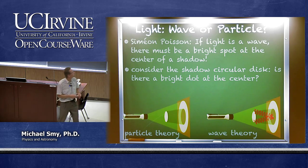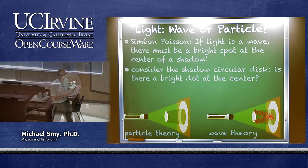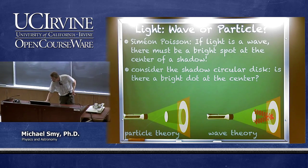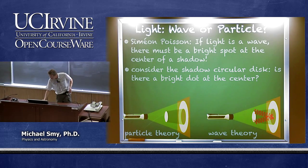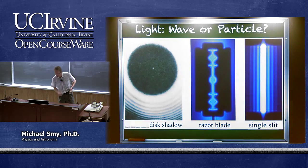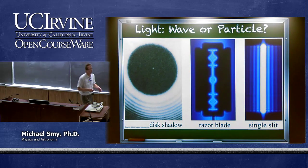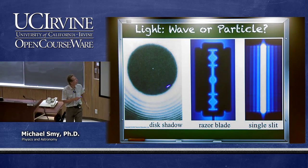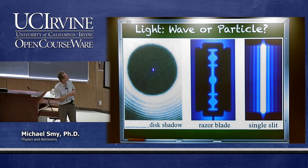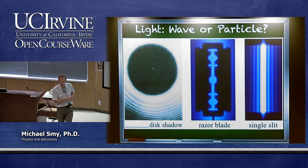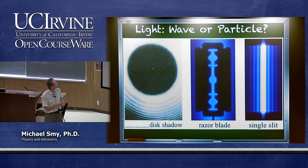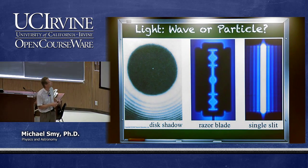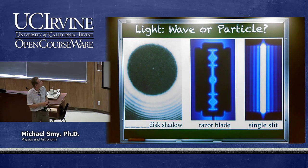And clearly that is ridiculous. However, if one does the experiment very carefully for a circular disk, you actually do find a bright spot in the very center, just like the wave theory predicts.